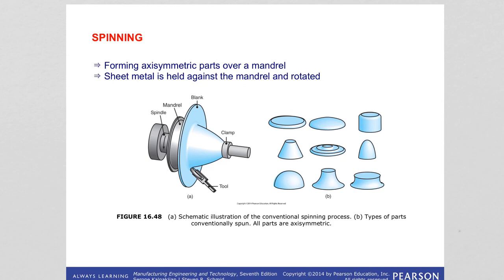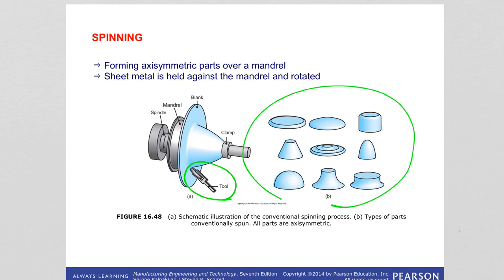There is also the spinning technique. This is basically used for forming axis-symmetric parts. A tool is held against the sheet metal and rotated attached to a mandrel. The tool touches the blank and forms the different types of shapes necessary — all these parts can be made with the spinning process. This is usually done manually at room temperature.